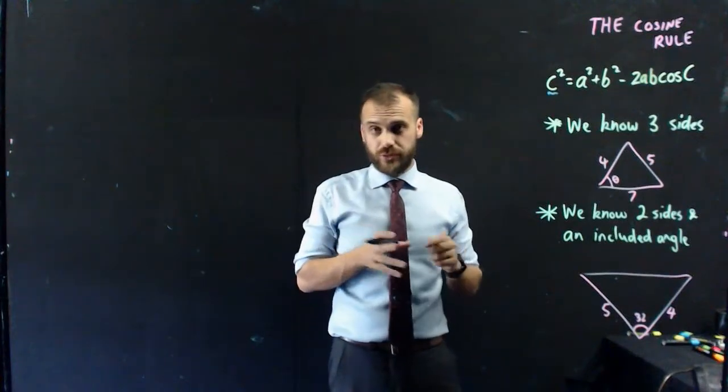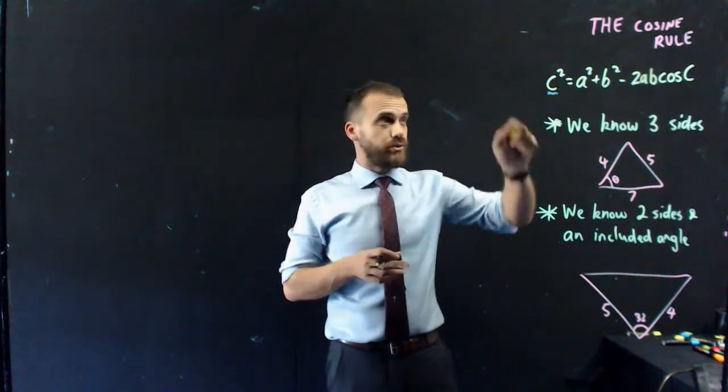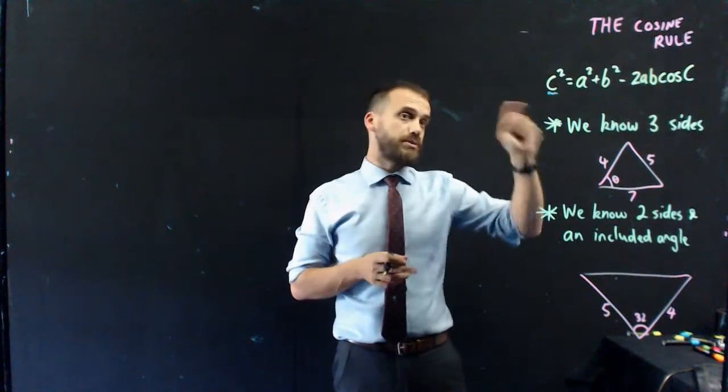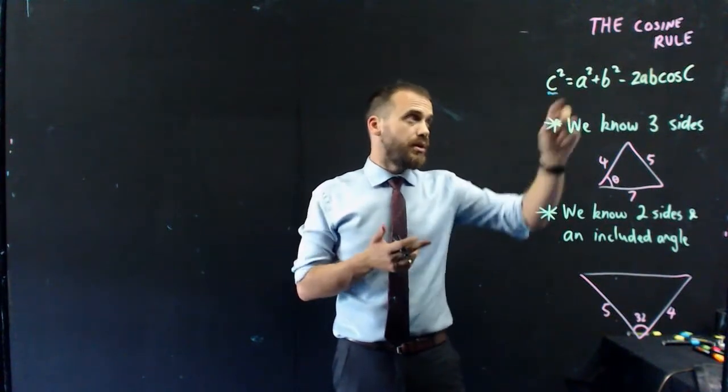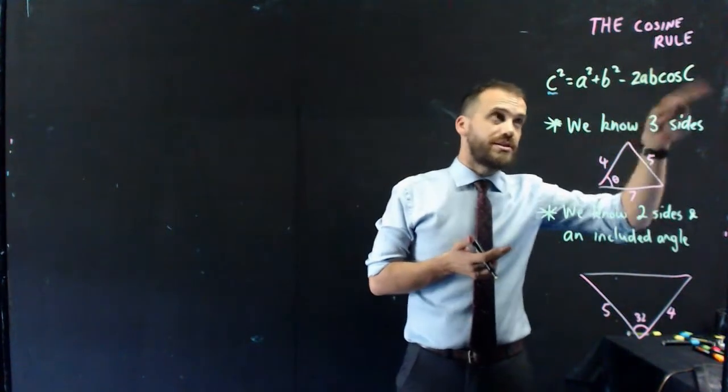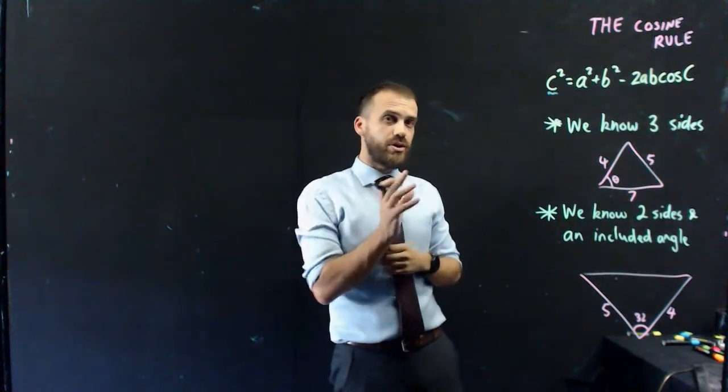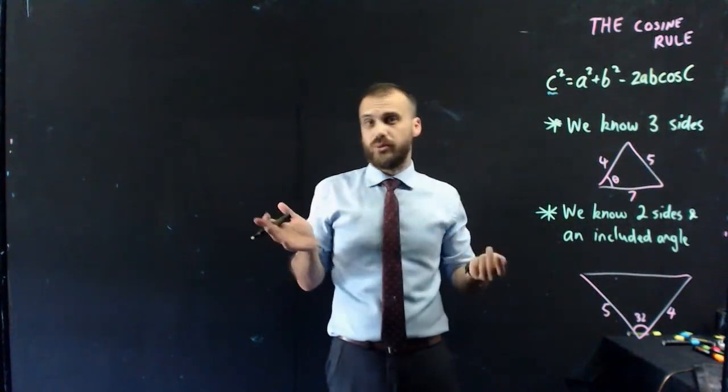So here we are, we're going to talk about the cosine rule now. It's a bit of a mouthful. c squared equals a squared plus b squared, sort of like Pythagoras, minus 2ab cos c. Now, we use the cosine rule when the sine rule just won't work.